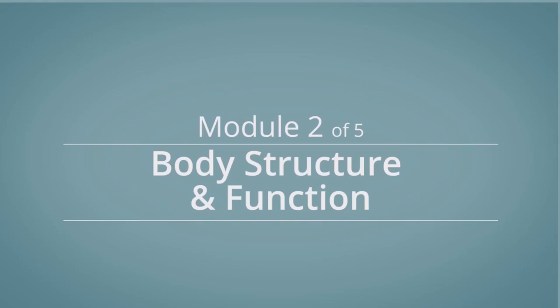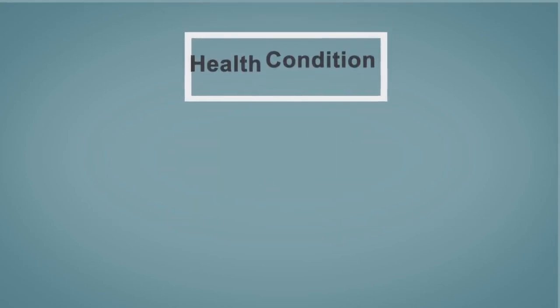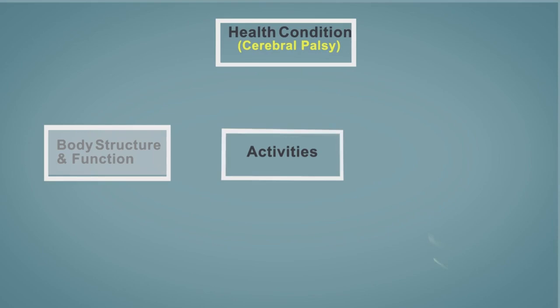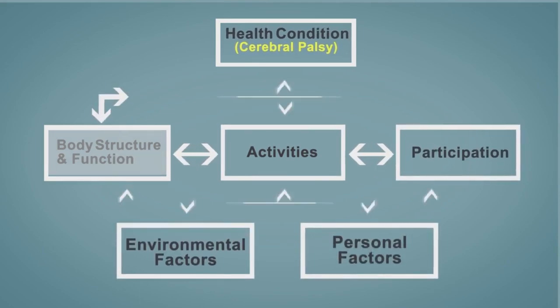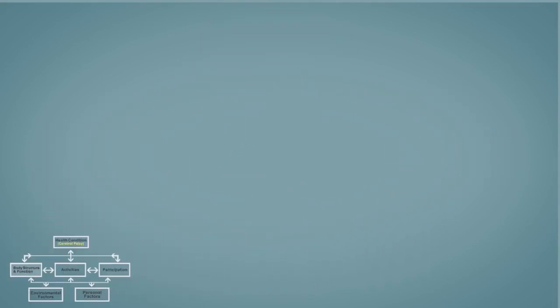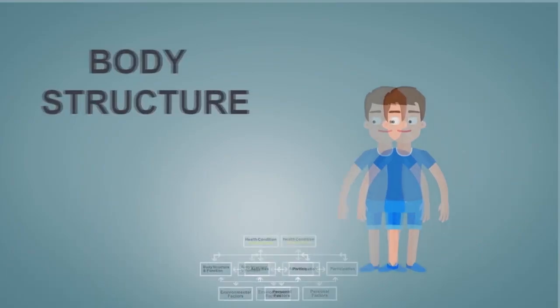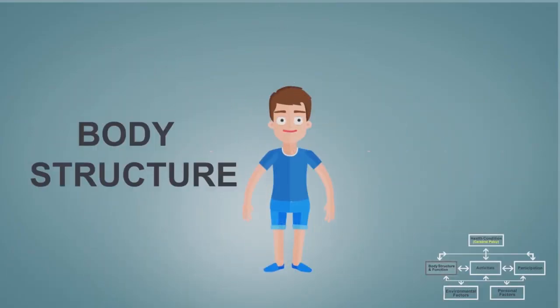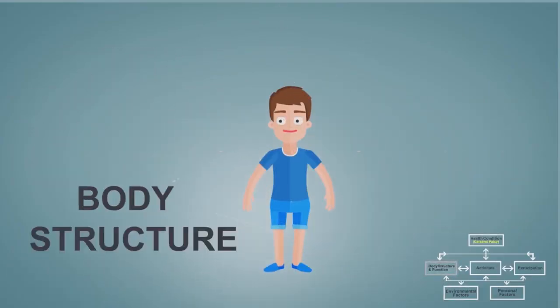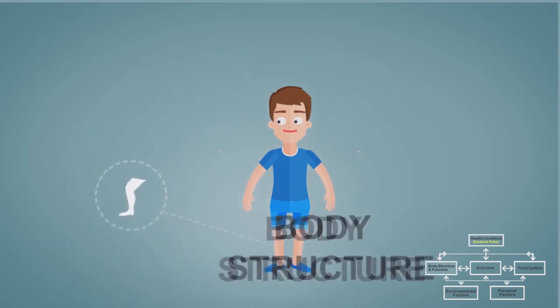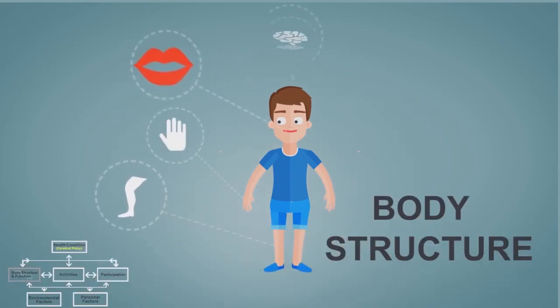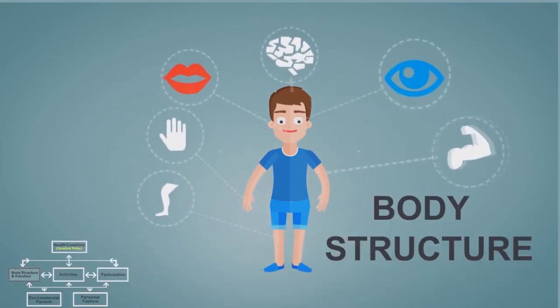Module 2 Body Structure and Function. What is Body Structure and Function? The ICF defines body structures as body parts. For example, legs, hands, mouth, brain, eyes and muscles.